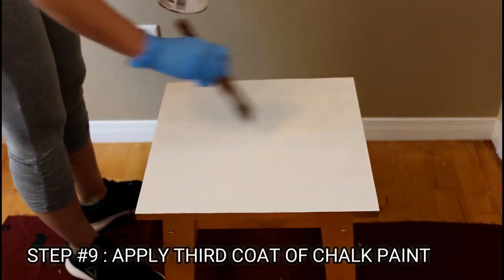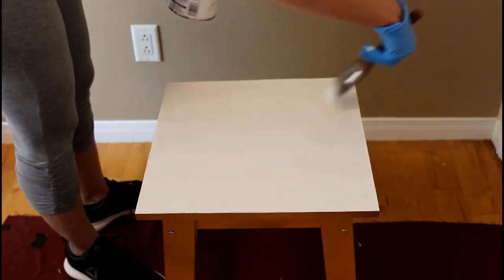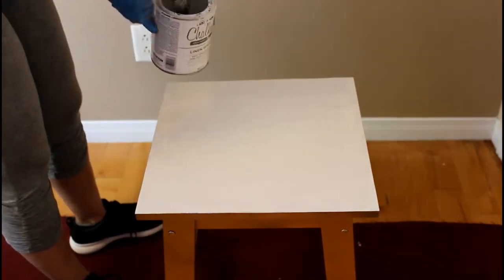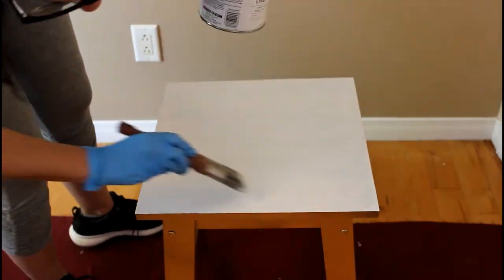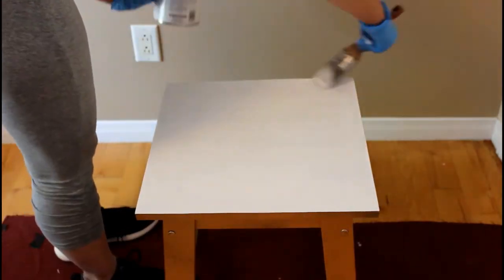After applying the third coat of my white chalk paint with a brush I will let my piece dry for at least four hours. I will then apply the protective sealant coat.